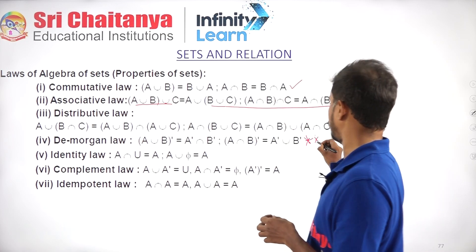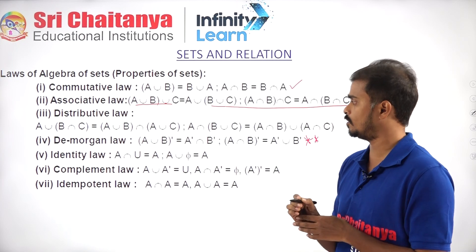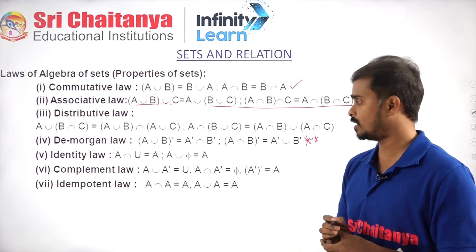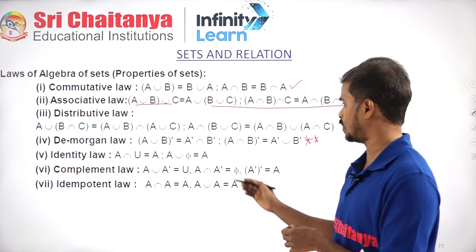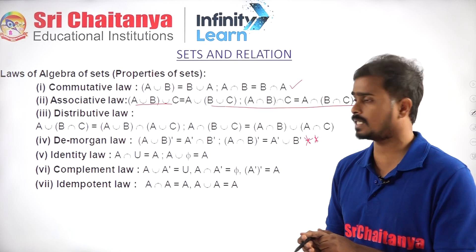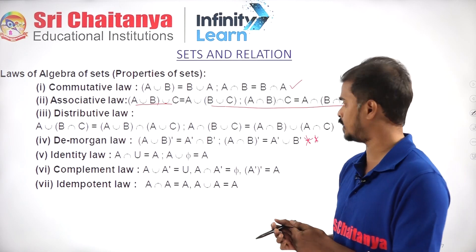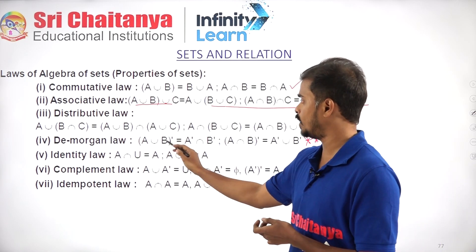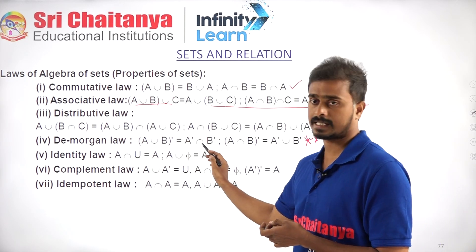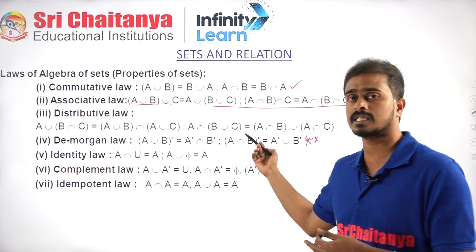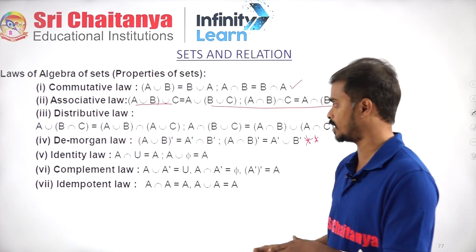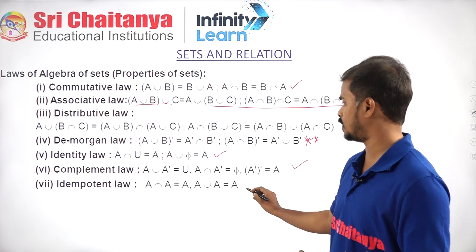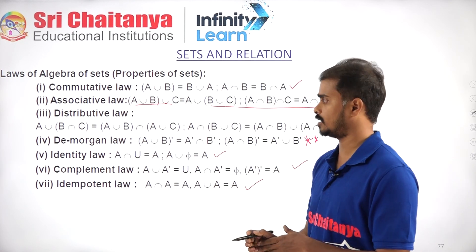De Morgan's Laws are important: (A∪B)' = A'∩B', and (A∩B)' = A'∪B'. Also covering identity laws and complementary laws — these are important.